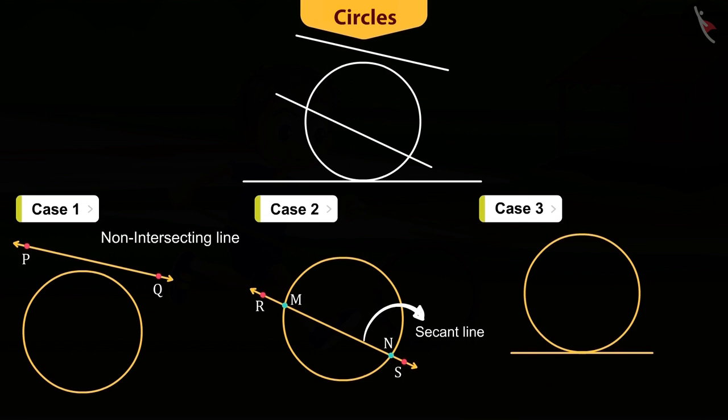In the third case, the line, say UV, intersects the circle at only one point. In this case, UV is called the tangent of the circle and the point common to the line and the circle is called the point of contact.